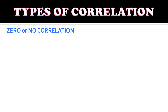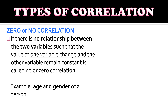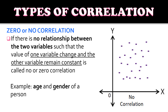And we have the zero or no correlation. If there is no relationship between the two variables, such that the value of one variable changes and the other variable remains constant, this is called a no or zero correlation. An example here is age and gender of a person — as a person's age increases, the gender of the person doesn't change. Here's how the graph looks like for a zero correlation.